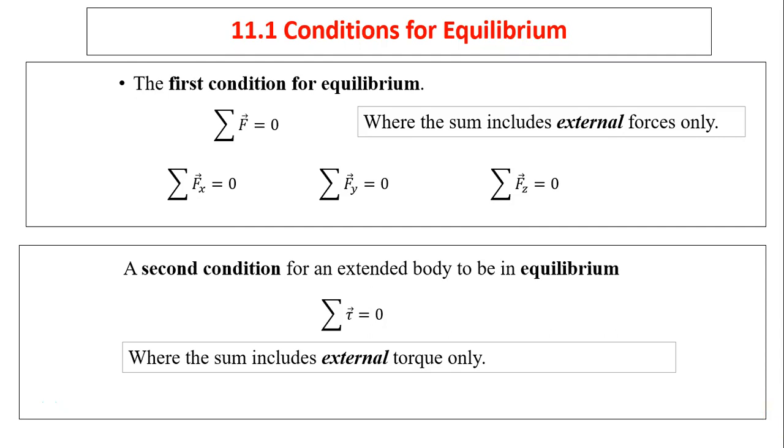Conditions for equilibrium. There are two conditions. First condition is net force has to be equal to zero. The second condition is net torque has to be zero. So net force means the net external force and net torque also means net external torque.